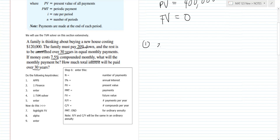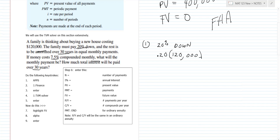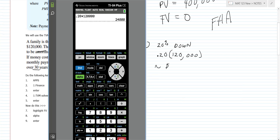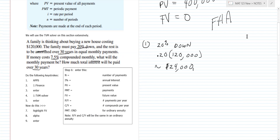The first thing we need to do is calculate the down payment. If you can't make a down payment you have to get an FHA loan, guaranteed by the government, and they charge mortgage insurance — more money out of your pocket. So making a down payment also keeps you from having that FHA loan. We do 20% of $120,000: 0.20 × 120,000 = $24,000 down payment.